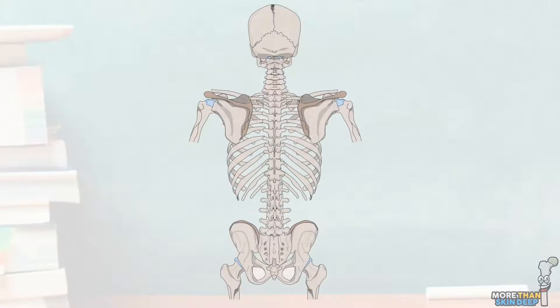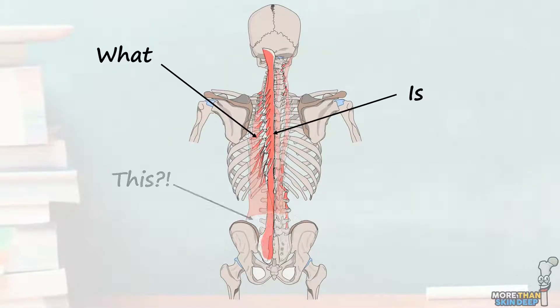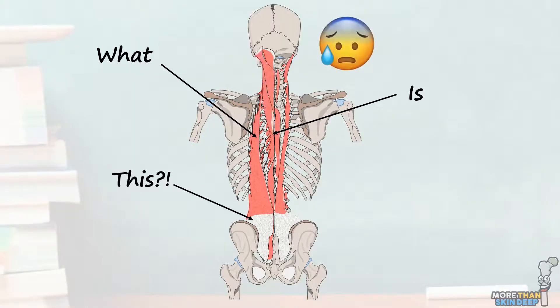The muscles of the back are numerous, complex, and frequently neglected during your anatomy studies. However, they play a vitally important role in posture, stabilisation of the vertebral column, respiration, movements of the shoulder, and much more.